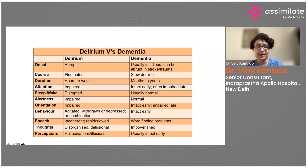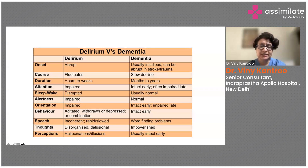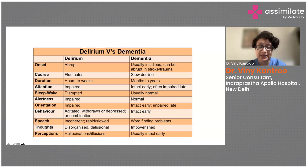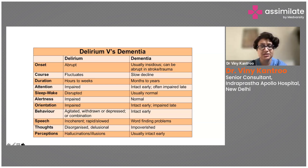The sleep-wake cycle is disturbed in delirium but usually normal in dementia. Alertness may be impaired in delirium and is normal in dementia. Orientation is always impaired in delirium, whereas in dementia it is intact early and impaired later. Behavior in delirium is agitated, withdrawn, or depressed — hypoactive, hyperactive, or mixed — while in dementia behavior is intact early but may become aggressive or withdrawn in later stages. Speech is incoherent and rapid or slowed in delirium; in dementia, there is word-finding difficulty, impoverished thoughts, and disorganization. Hallucinations and illusions occur in delirium but are less common in dementia.